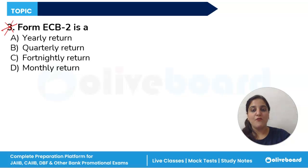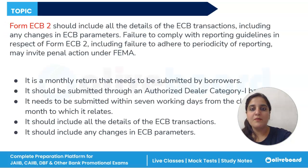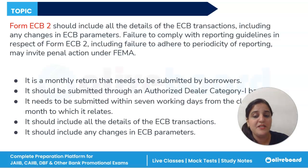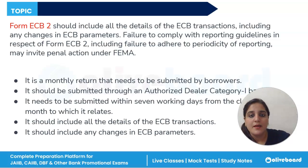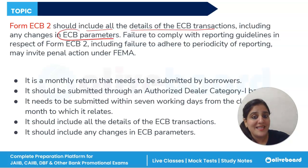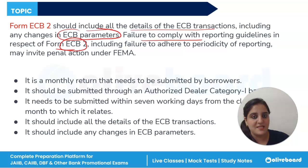An important topic: what is Form ECB2? The Form ECB2 is an important document for reporting ECB transactions. Borrowers need to ensure they submit it on time with all required details, including all details of ECB transactions and any changes in ECB parameters. Failure to comply with reporting guidelines, including failure to adhere to periodicity of reporting, may invite penal action under FEMA.